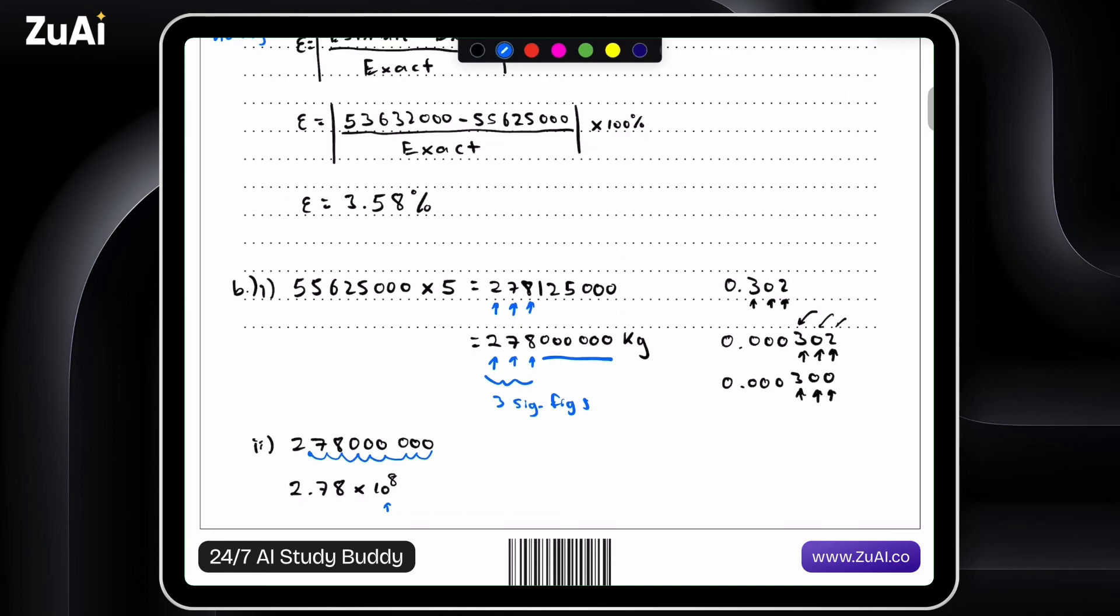So we would write this as 2.78 times 10 to the 8. And this is telling us that we want eight zeros, essentially. Eight zeros after our decimal point. There it is, in scientific notation, 2.78 times 10 to the 8.